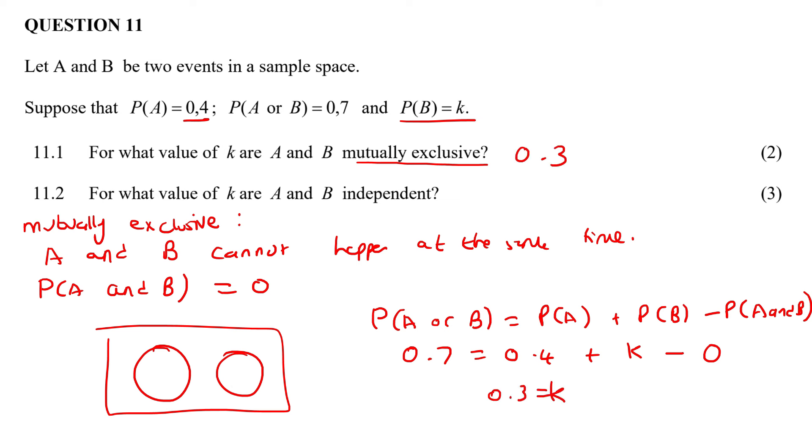This next one says, for what value of K are A and B independent? Now independent, you must remember, it just means the following. It means that the probability of A and B is equal to the probability of A multiplied by the probability of B. That is what independent means.